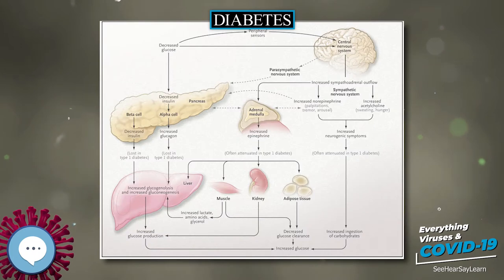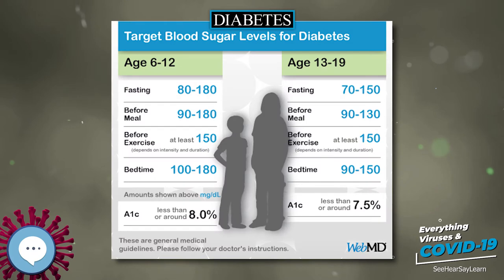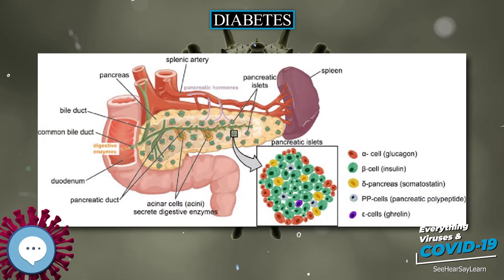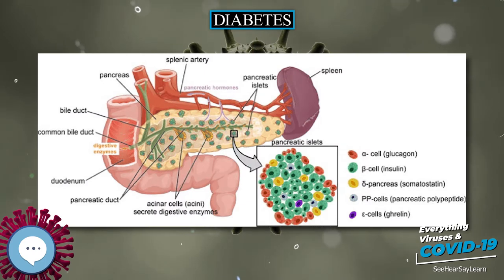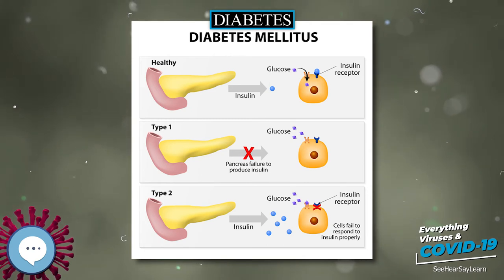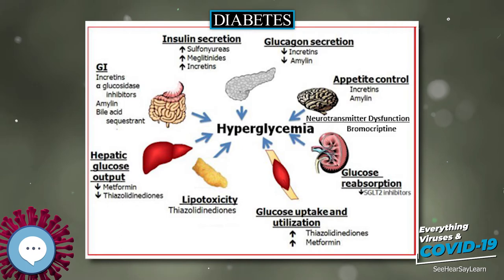The classic symptoms of untreated diabetes are unintended weight loss, polyuria (increased urination), polydipsia (increased thirst), and polyphagia (increased hunger). Symptoms may develop rapidly, within weeks or months, in type 1 diabetes, while they usually develop much more slowly and may be subtle or absent in type 2 diabetes.